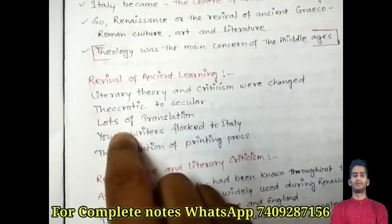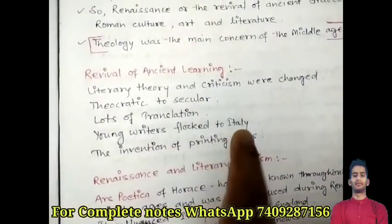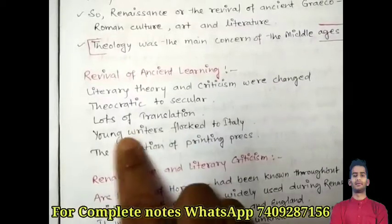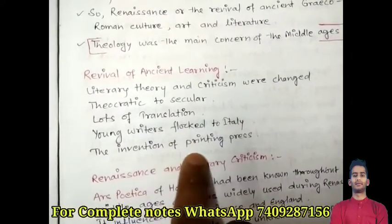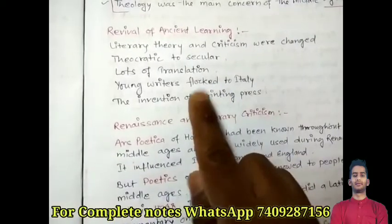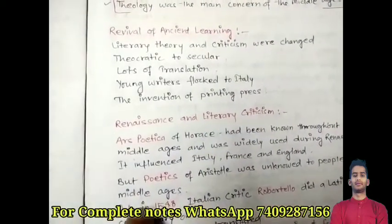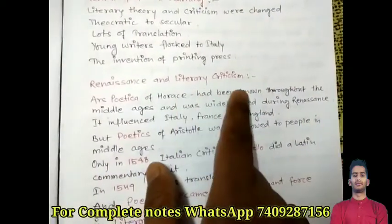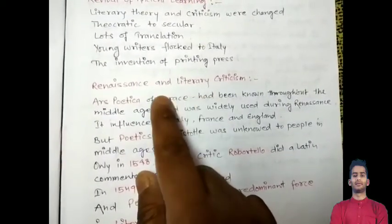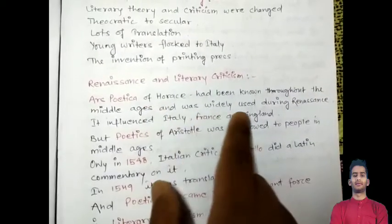The shift was from theocratic to secular, and we get a lot of translations during this period. Young writers flock to Italy. The invention of the printing press was also a key development. Horace's Ars Poetica had been known throughout the Middle Ages and was widely used during the Renaissance.